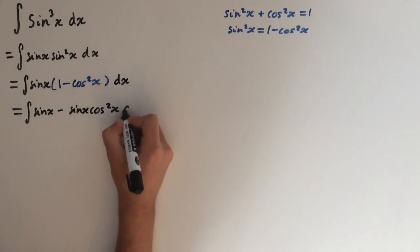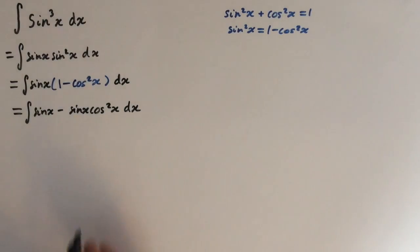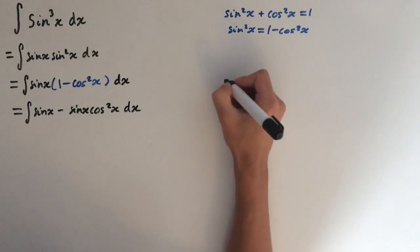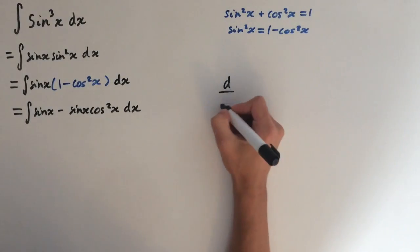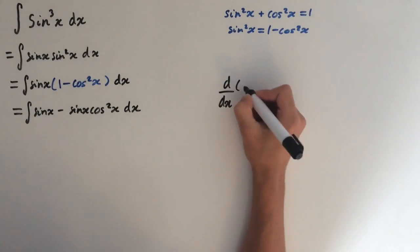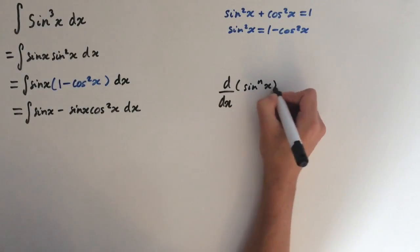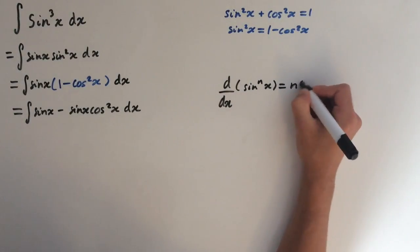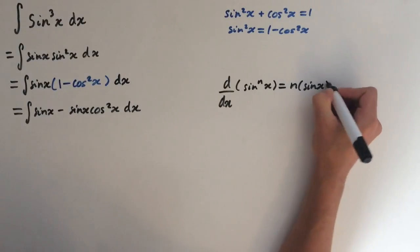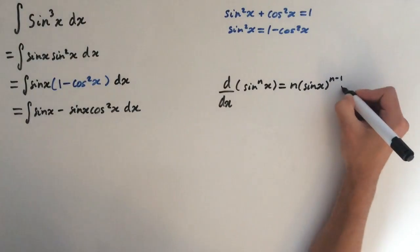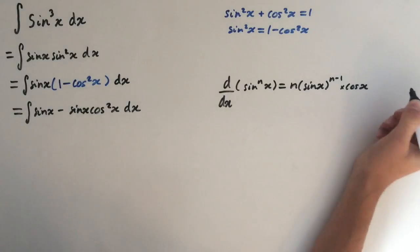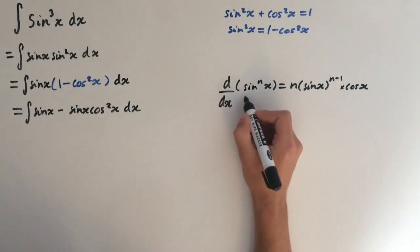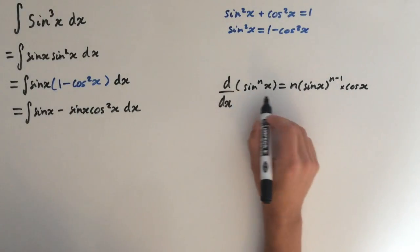The whole reason we've done this is because if you differentiate sine of x or cosine of x to a high power, let's call it n, we'll get n times sine of x to the power of n minus 1 times cosine of x. So you can see here if we want to integrate we need its derivative outside.